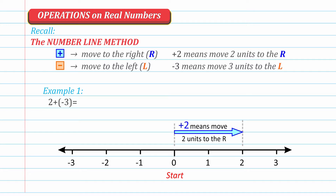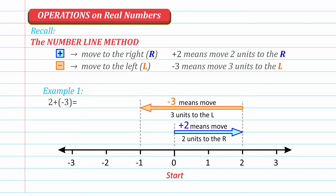From the end of that first arrow, we draw the second arrow using the second addend. Negative 3 means move 3 units to the left since it is negative. Therefore, we have this second arrow. We look at where the second arrow ends — it points to negative 1. Therefore, we can conclude that 2 plus negative 3 equals negative 1. That's how easy it is to use the number line method to visualize adding signed numbers.